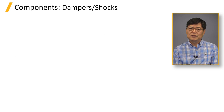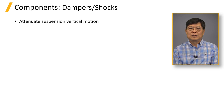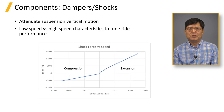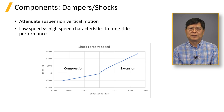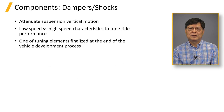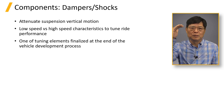Dampers attenuate the vertical motion of the suspension. Relative motion between shock tube and piston generates the damping forces. Low and medium speed damping characteristics control ride qualities. Compression damping is softer than rebound damping. A damper is attached to a suspension part such as knuckle or LCA and to the vehicle body at the top.